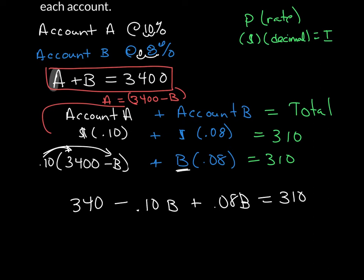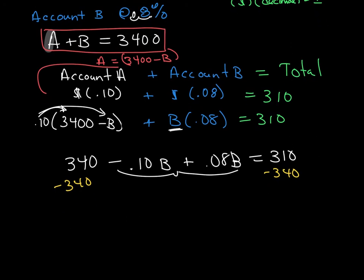At this point, I want to combine my like terms over here and subtract 340 from both sides. That leaves me with negative 0.02B is equal to negative 30, and then finally divide both sides. That tells me that the amount of money that I invested in account B is $1,500.